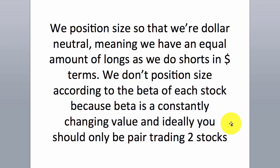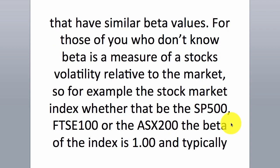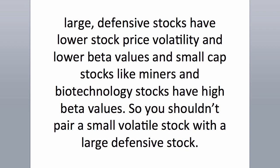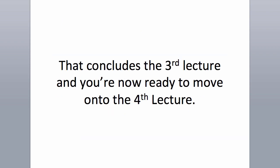We position size to be dollar neutral — an equal amount of longs and shorts in dollar terms. We don't position size according to the beta of each stock, because beta is a constantly changing value, and ideally you should only pair trade two stocks with similar beta values. For those who don't know, beta is a measure of a stock's volatility relative to the market. The stock market index — whether the S&P 500, FTSE 100, or ASX 200 — has a beta of 1.0. Large defensive stocks have lower beta values, while small-cap stocks like miners and biotech have high beta values. You shouldn't pair a small volatile stock with a large defensive stock. This concludes the third lecture, and you're now ready to move on to the fourth lecture.